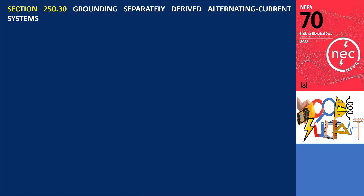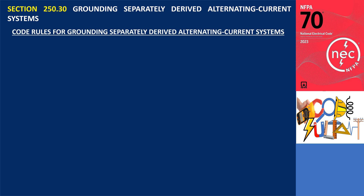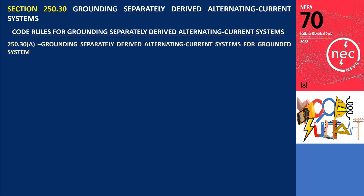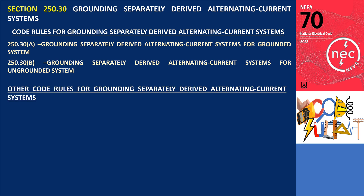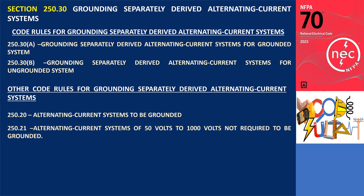Section 250.30 mandates that grounding for separately derived systems must adhere not only to the regulations outlined in sections 250.30 A and 250.30 B, but separately derived systems must also adhere to the provisions in 250.20, 250.21, or 250.26, depending on their applicability.